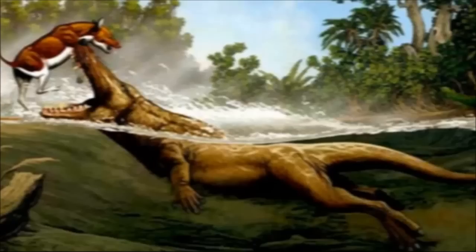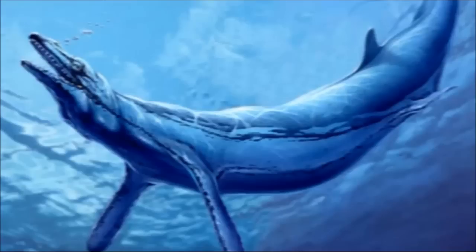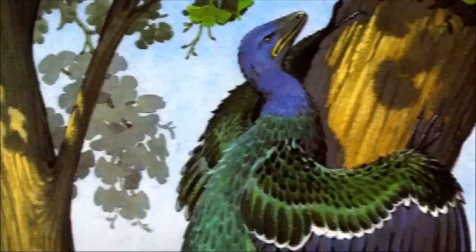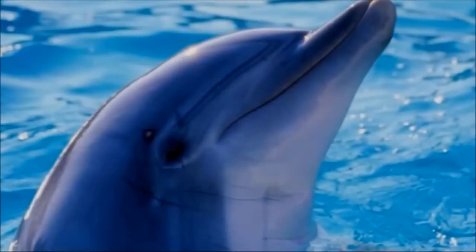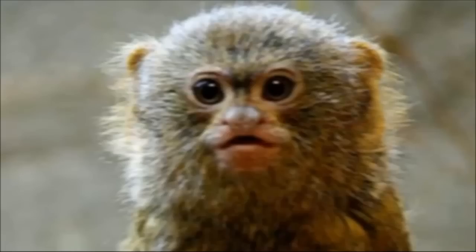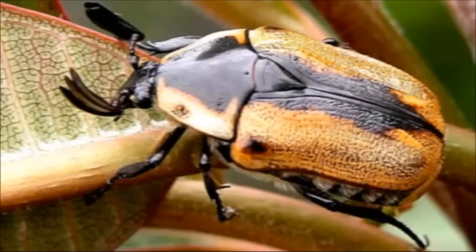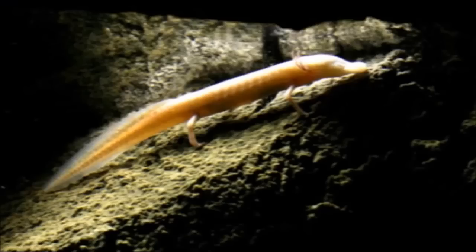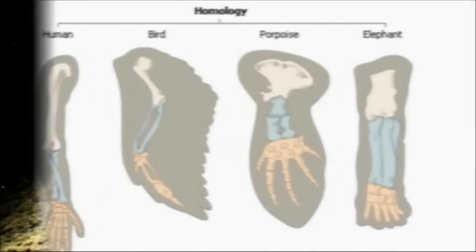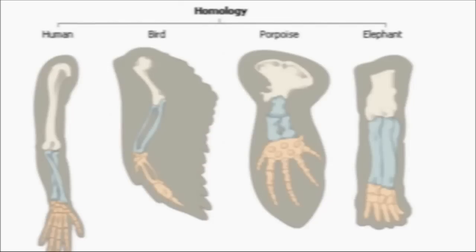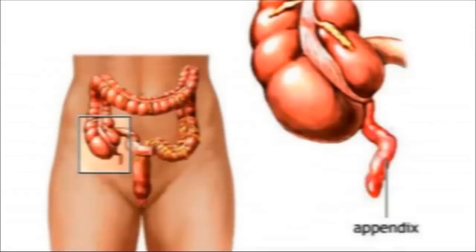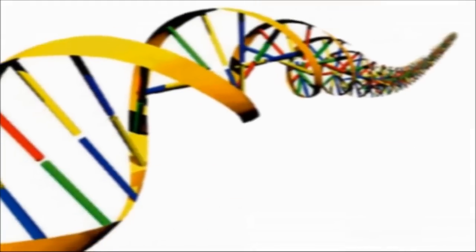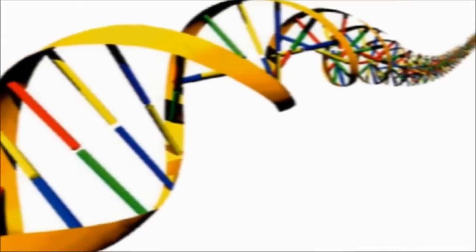Not only do we find multitudes of transitional species all throughout the fossil record, we also find within currently living animals a great variety of evidence displaying ongoing transitional processes — for example, homologous structures, vestigial organs, and even evidence tucked away within the genetic code.